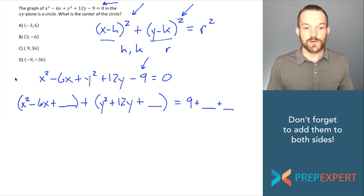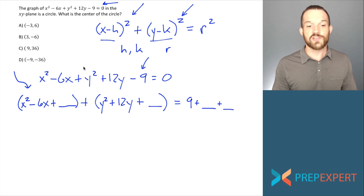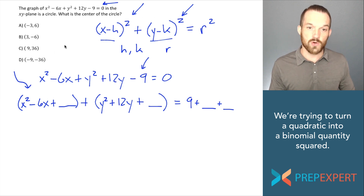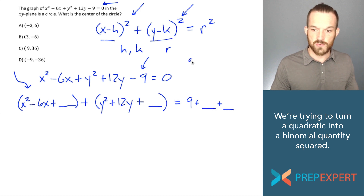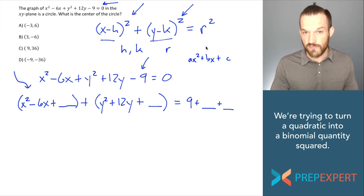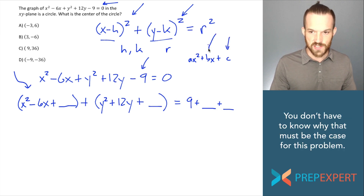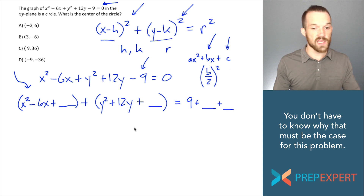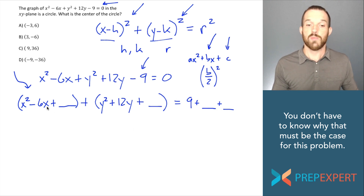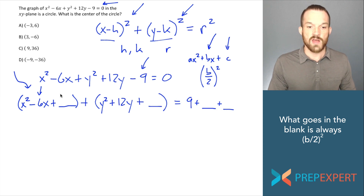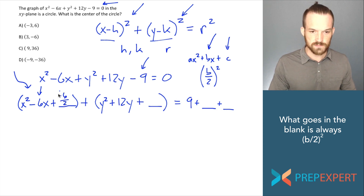What goes in the blanks? Our job is to turn this x-quadratic into a quadratic that can be factored into a binomial quantity squared. For any binomial quantity squared, its c-term — referencing the standard form ax squared plus bx plus c — must equal its b-term over 2, quantity squared. So to know what to put in the blank, I take the b-term for my x's, put it over 2, and quantity square it. The b-term for the x's is negative 6, so I take negative 6 over 2, quantity squared. Let's do the same for the y's: the b-term for the y's is 12, so 12 over 2, quantity squared.